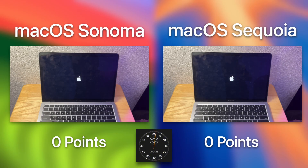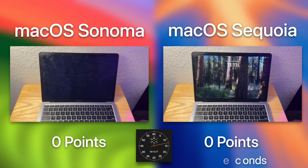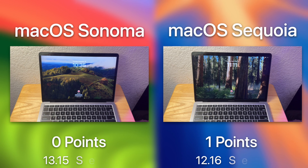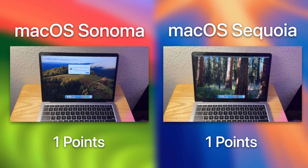This first test is a boot up test. While this isn't the most important test, it tells how quickly MacOS will be able to start up. Sequoia started slightly faster at 12 seconds, while Sonoma took 13. The next test is a login test, and right off the bat, Sonoma was significantly faster than Sequoia.